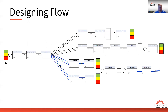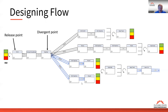Here's a basic value stream map — not uncommon from what I see in companies. We want to understand different points in the flow because our batching decisions can affect different value streams based on the current design. We always have a release point where raw materials are released into the system. We can also have a divergent point — for example, the restrike operation here is feeding four different value streams downstream.